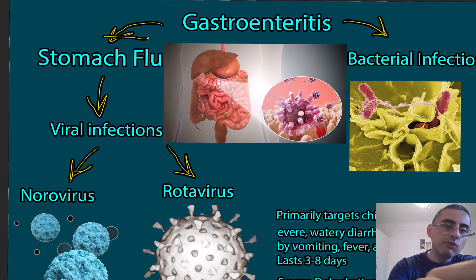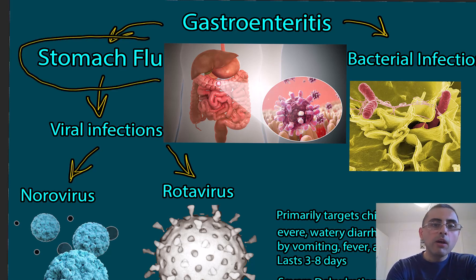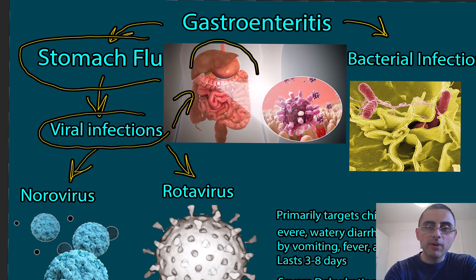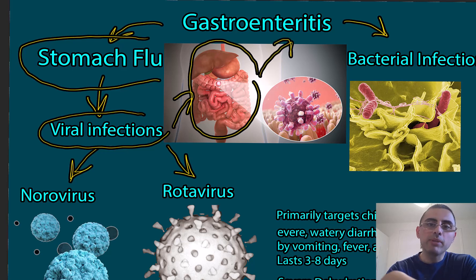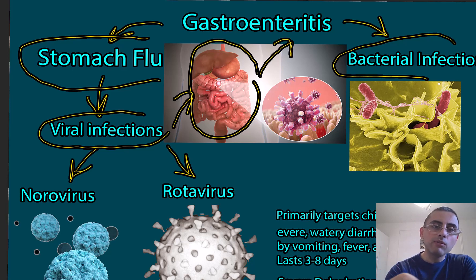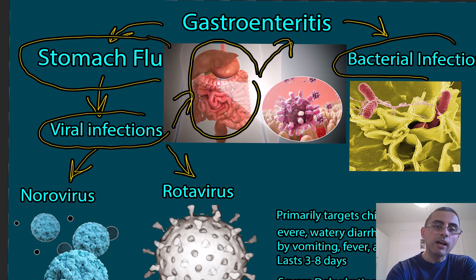When we say stomach flu, we usually mean viral infections which affect the gastrointestinal tract. The common name for infection and inflammation of the gastrointestinal tract is gastroenteritis. However, gastroenteritis can also be caused by bacteria, such as Salmonella or Escherichia coli. So when we say stomach flu, we don't mean gastroenteritis generally, but specifically gastroenteritis caused by viral infections.